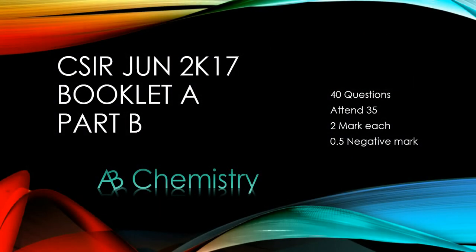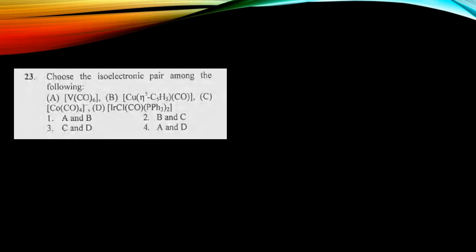Hi guys, namaste and welcome to AP Chemistry. Let's see a question asked in June 2017 on Booklet A Part B. This is question number 23: Choose the isoelectronic pair among the following. A: Vanadium(CO)₆, B: Copper(η⁵-C₅H₅)(CO), C: Co(CO)₄⁻, D: Iridium(Cl)(CO)(PPh₃)₂. The options are: A and B, B and C, C and D, and A and D.